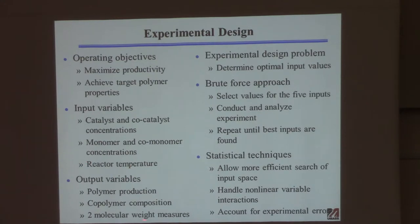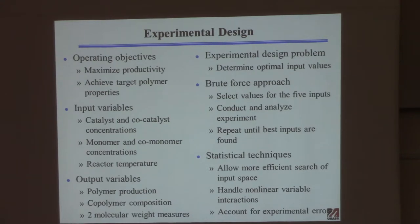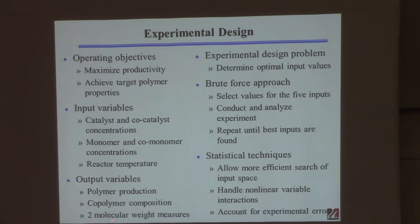These are typically what you'd call outputs. You can vary those five inputs, and these are the four things you're interested in: how much polymer you make (pounds per hour or day), copolymer composition, and two measures of molecular weight. Since we'll use this example more than once, let me draw this picture.